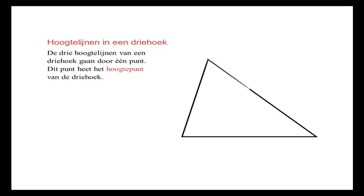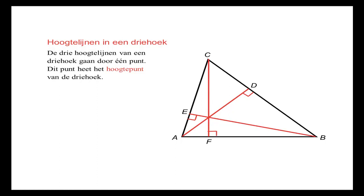De drie hoogtelijnen van een driehoek gaan ook door één punt, en dat wordt het hoogtepunt genoemd. We tekenen een hoogtelijn vanuit A op BC, een hoogtelijn vanuit B op AC, en een hoogtelijn vanuit C op AB. Daar waar ze elkaar snijden, bij dat punt, wordt ook wel het hoogtepunt genoemd.